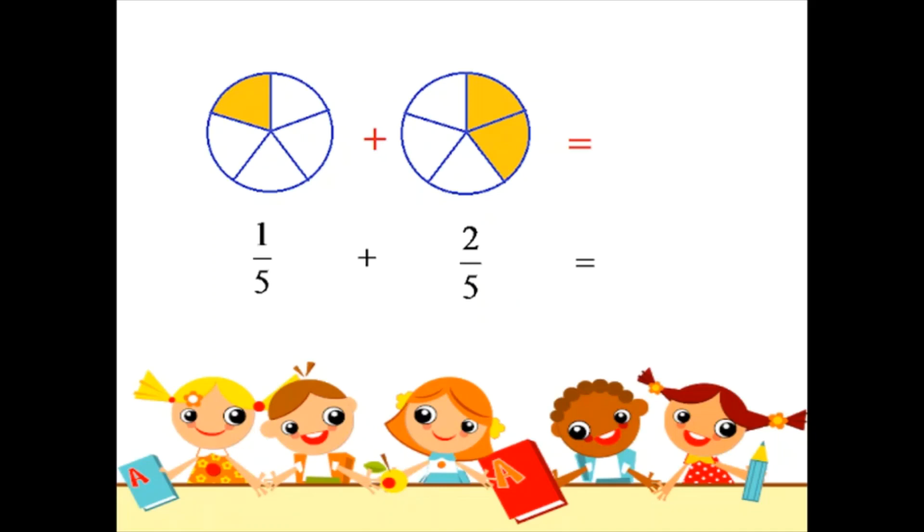We have to combine these two diagrams together and we will get this diagram where 3 parts out of 5 is shaded. So, whenever the denominators are same, you have to add the numerators to get the answer.